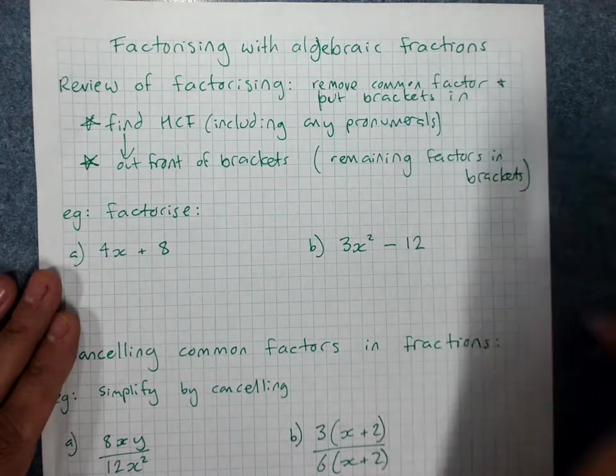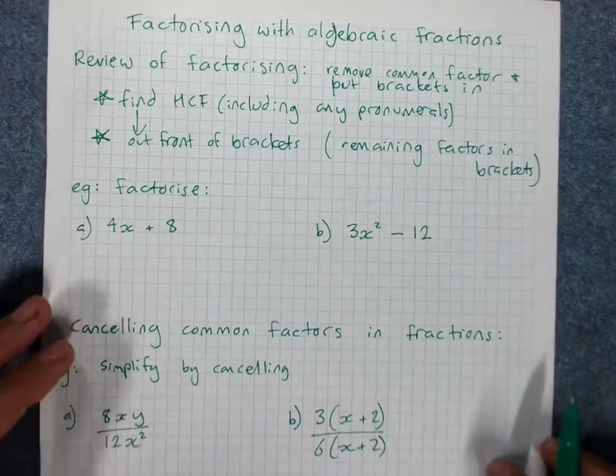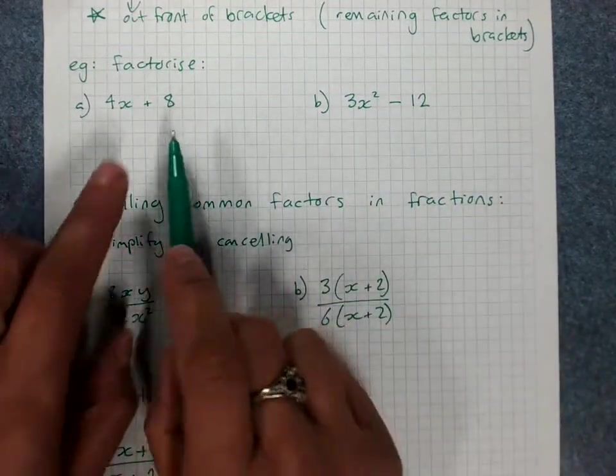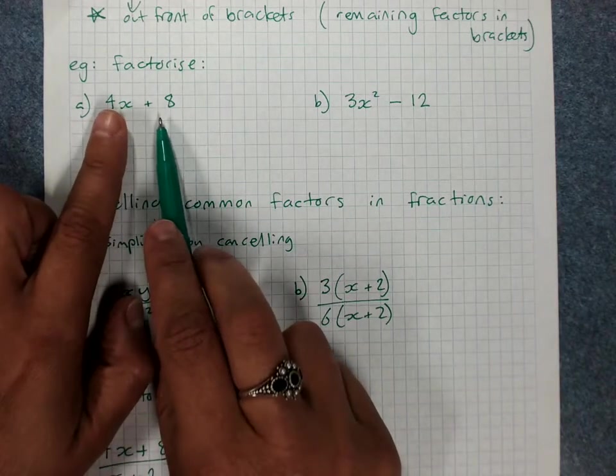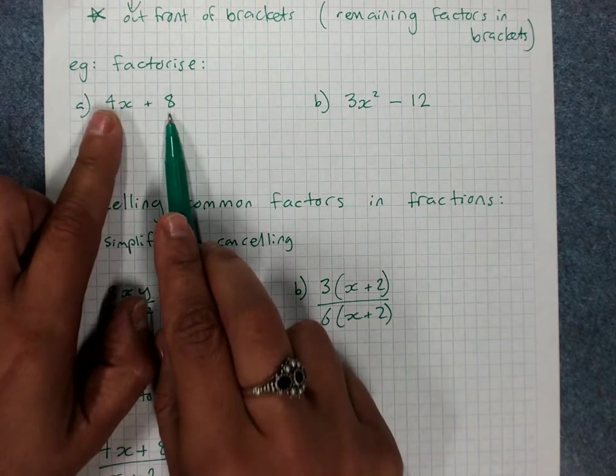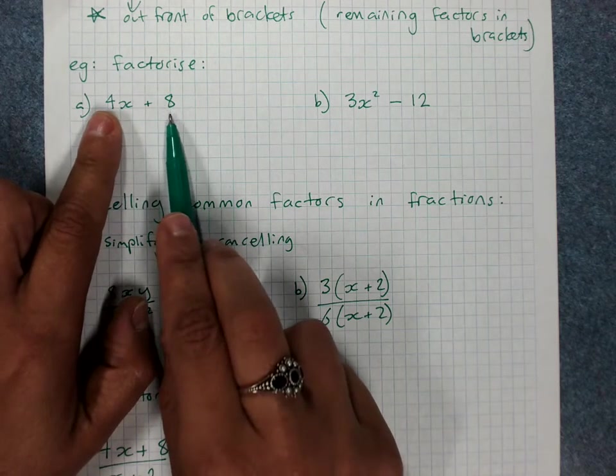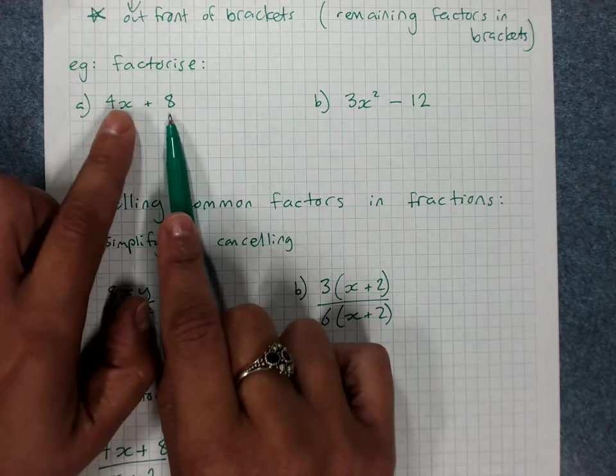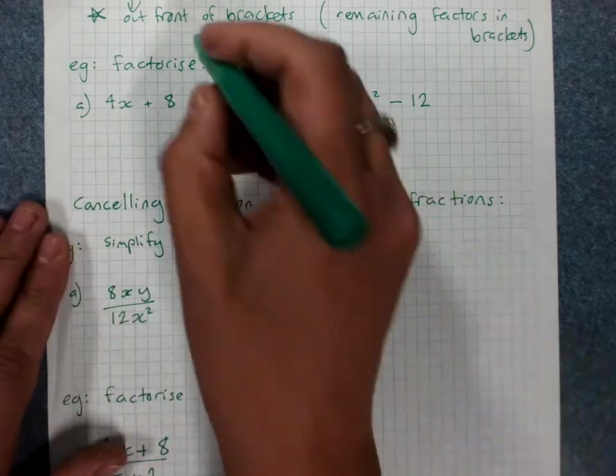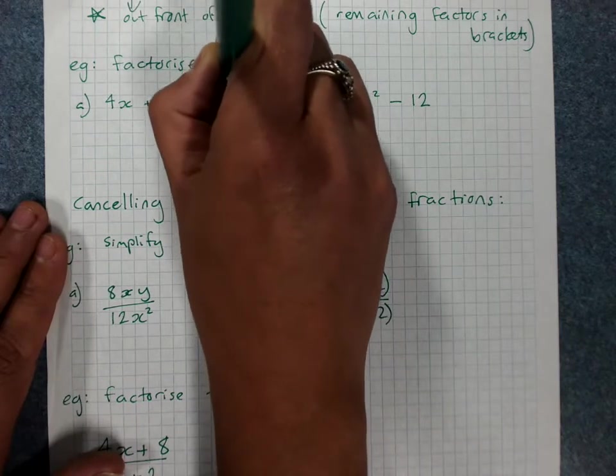So we'll do a couple of examples just to remind ourselves. So I've been asked to factorise these. I have to look for the highest number that goes into both 4 and 8. Always look at the smallest one. Does 4 go evenly into 8? Yes it does. So it's 4. x, but there's no x here, so my HCF here is 4. You can write it down if that helps you.